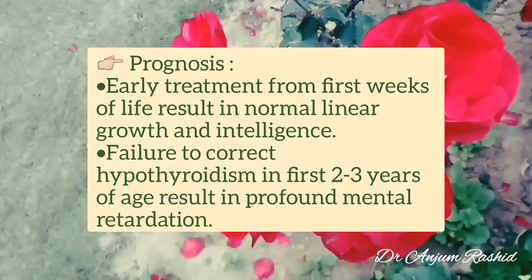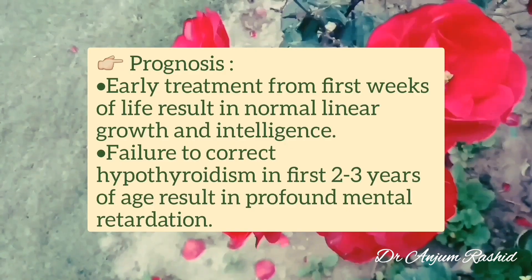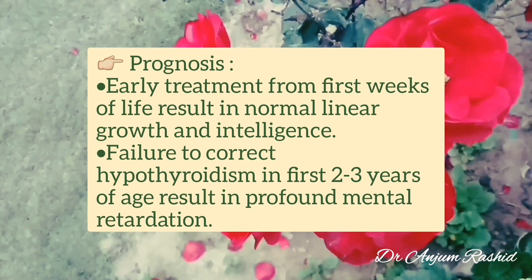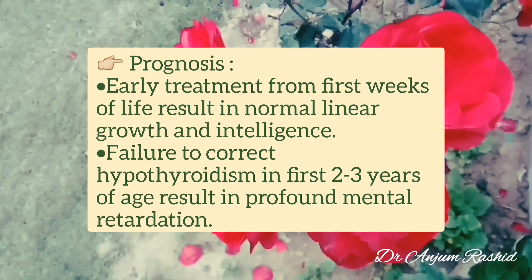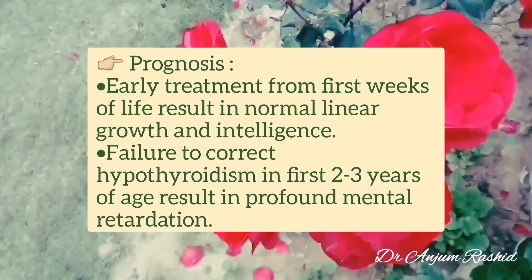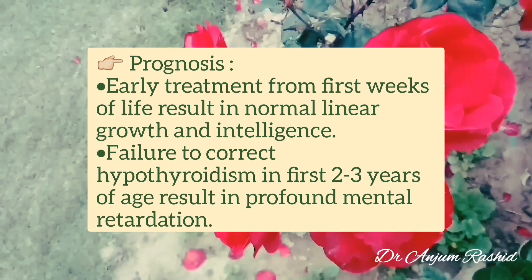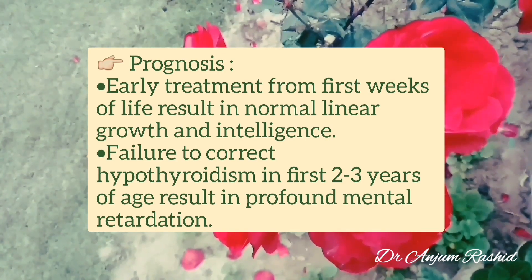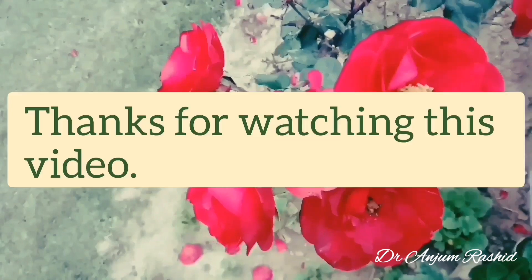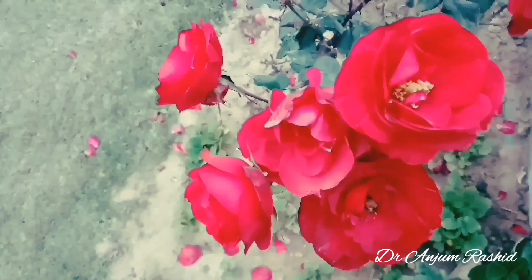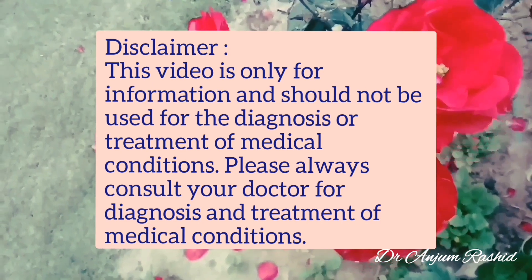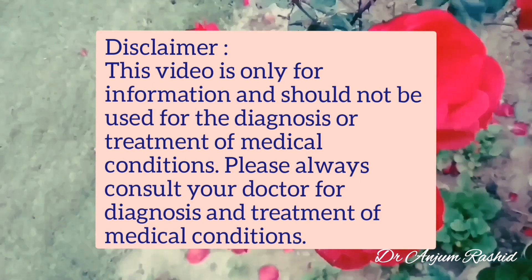Regarding the prognosis of congenital hypothyroidism: early treatment from the first weeks of life results in normal linear growth and intelligence. However, failure to correct hypothyroidism in the first two to three years of age can result in profound mental retardation. Thanks for watching — please like, share, comment, and subscribe to the YouTube channel for more informative health-related videos.